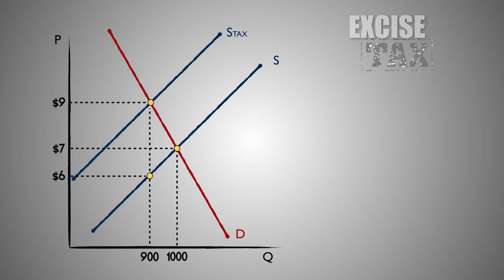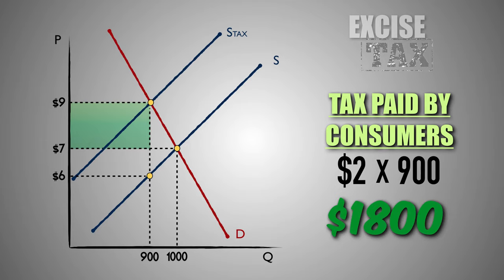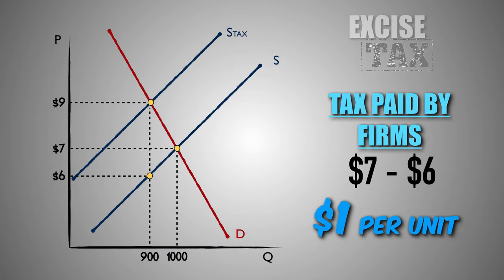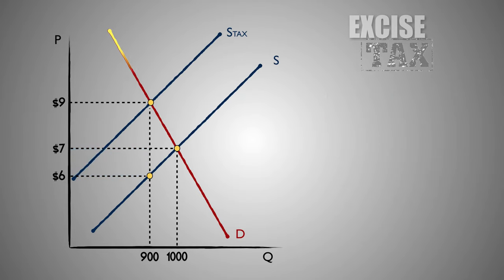We can also determine how firms in the industry share the tax burden with consumers. Before the tax, the equilibrium price in the market for Good F was $7. However, after the $3 per unit excise tax was imposed, the price of Good F rose to $9. Because the price paid by buyers increased by $2, we can conclude that consumers paid two-thirds of the tax burden — they paid $2 of the $3 tax through higher product price. The portion of total tax revenue paid by consumers was $1,800. The remaining one-third was paid directly by producers, who kept the seller's price of $6 per unit after paying $3 per unit in taxes. The portion of total tax revenue paid by firms is $900. Because the demand for Good F is more inelastic, consumers are relatively unresponsive to price changes, so firms passed a majority of the tax burden onto consumers and paid less of it themselves.